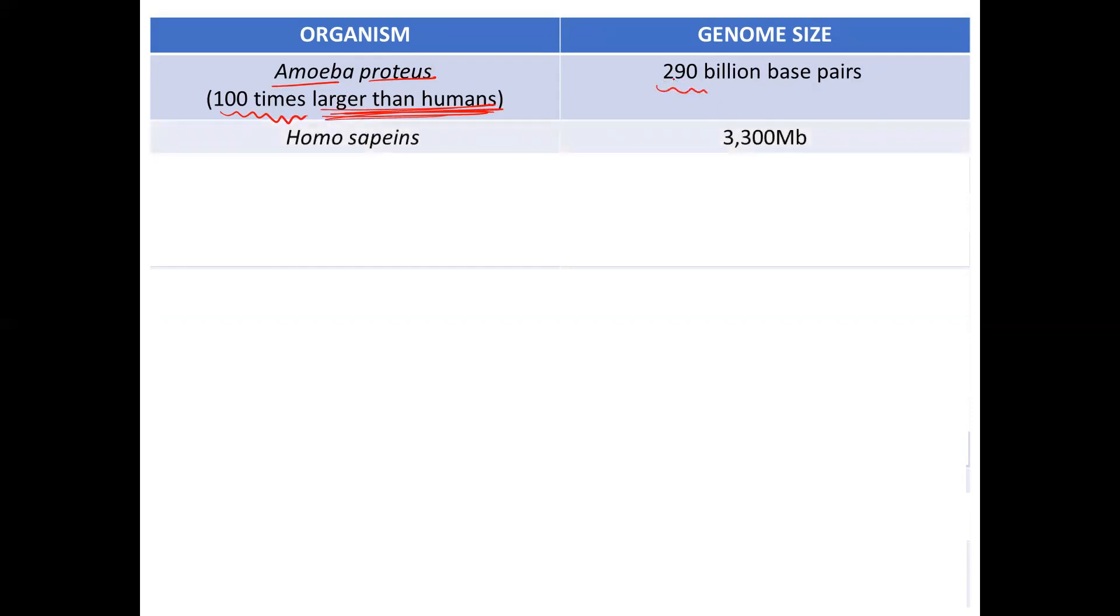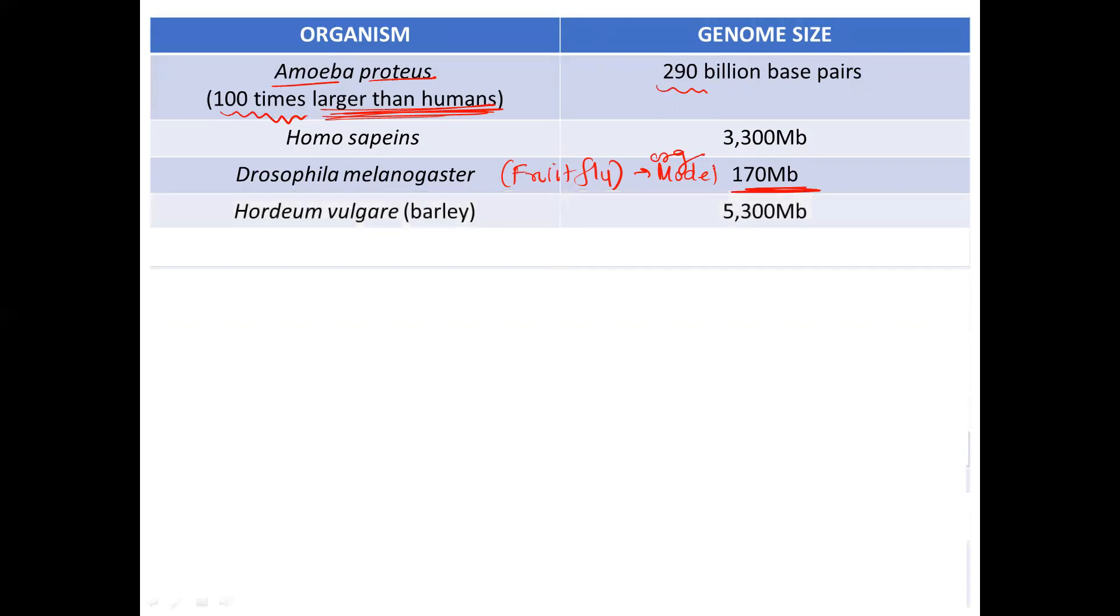Next, Homo sapiens, that is 3,300 MB. Then Drosophila melanogaster, also called as a fruit fly. Again a very important model organism. The genome size is 170 MB.